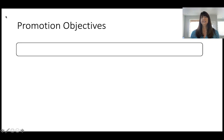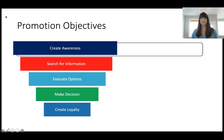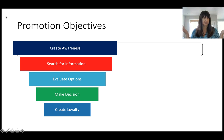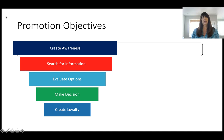A promotion objective is basically what you want to accomplish as a business, and the objective you establish is going to drive the type of promotional tools you create. I have a funnel here. Those familiar with sales know that a funnel describes getting somebody to notice you, identify they have a need, and going through the stages to close the sale. I prefer to use a journey which is linear and circular, but today I'll show you how to use a funnel strategy to compartmentalize and think about the types of tools you can use.